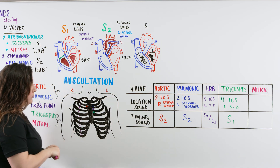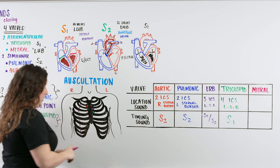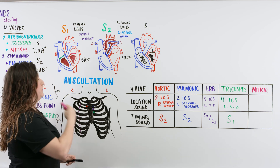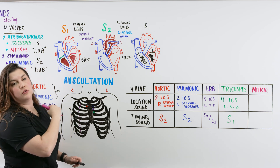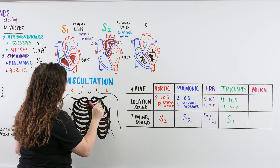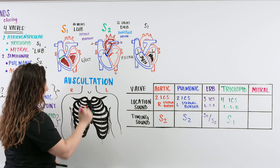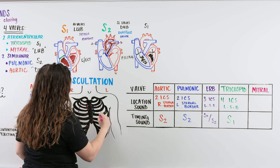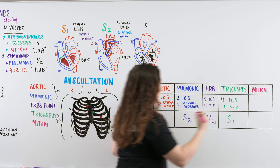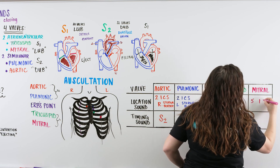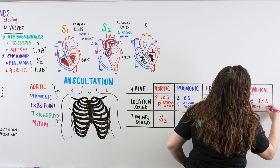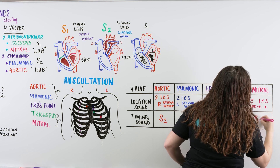The last site is our mitral, which is a little tricky. With your patient laying flat, palpate along their clavicle to find the midpoint. From there, go down to the fifth intercostal space at the midclavicular line. You'll be listening for an S1 there.